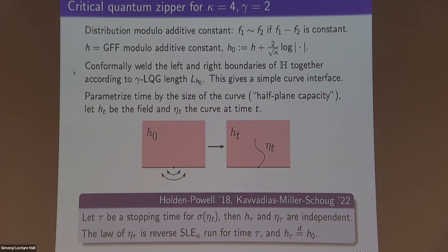There is also a critical version of this. For critical LQG with kappa = 4 and gamma = 2, the same result holds. This is due to work of Holden-Powell and Cavalieri-Jego-Schoch, who show this gluing procedure is unique conformal welding.